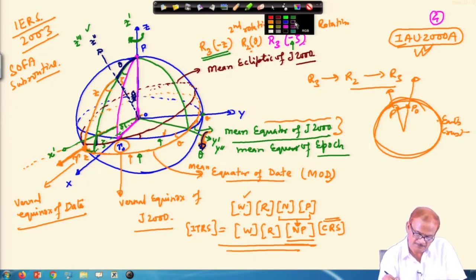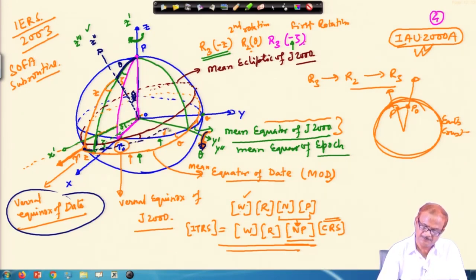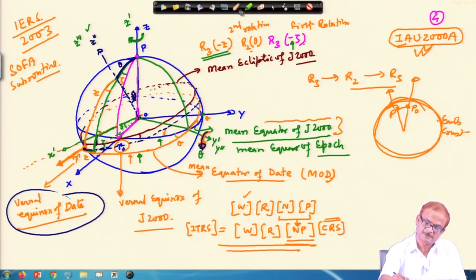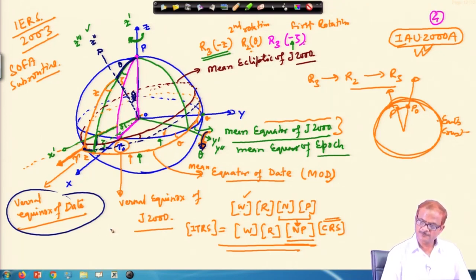Finally, we have to wind it up. If we are saying that this is the vernal equinox of the date, that means the ecliptic must pass through this point. We will stop for this particular lecture here and continue in the next lecture.